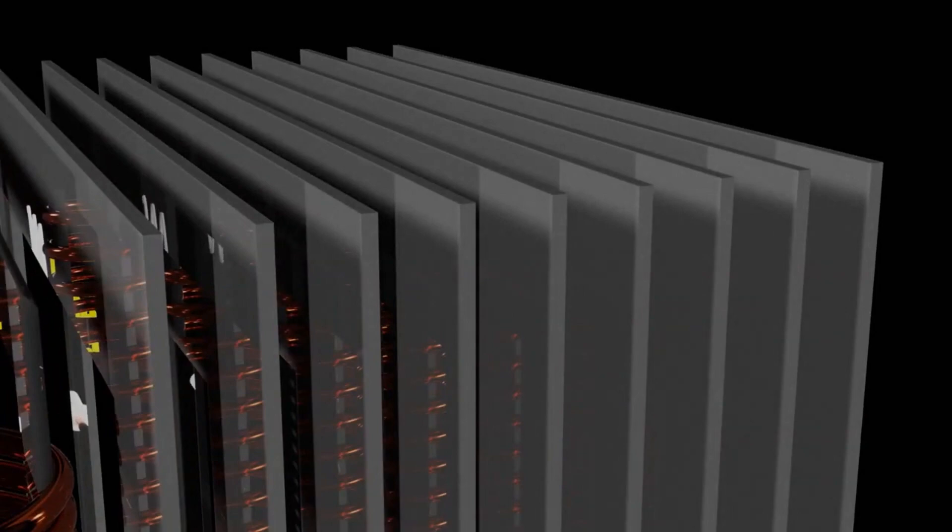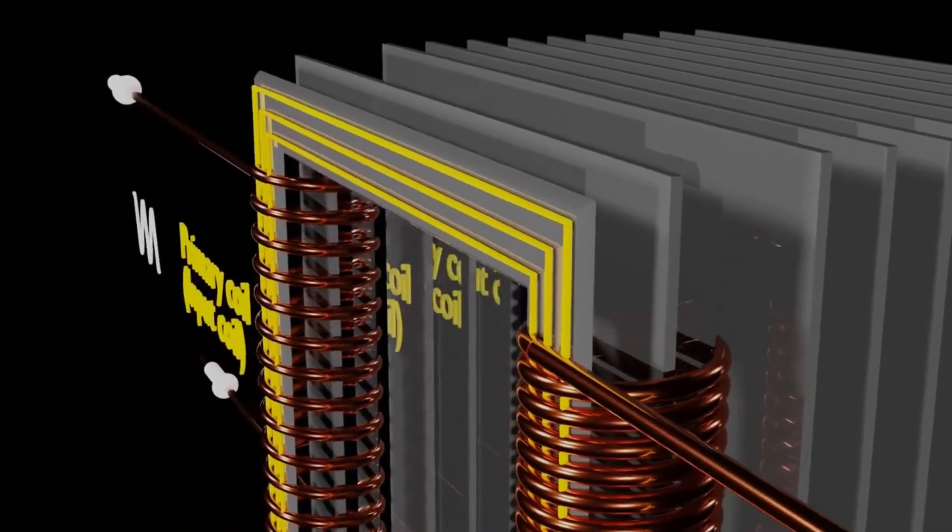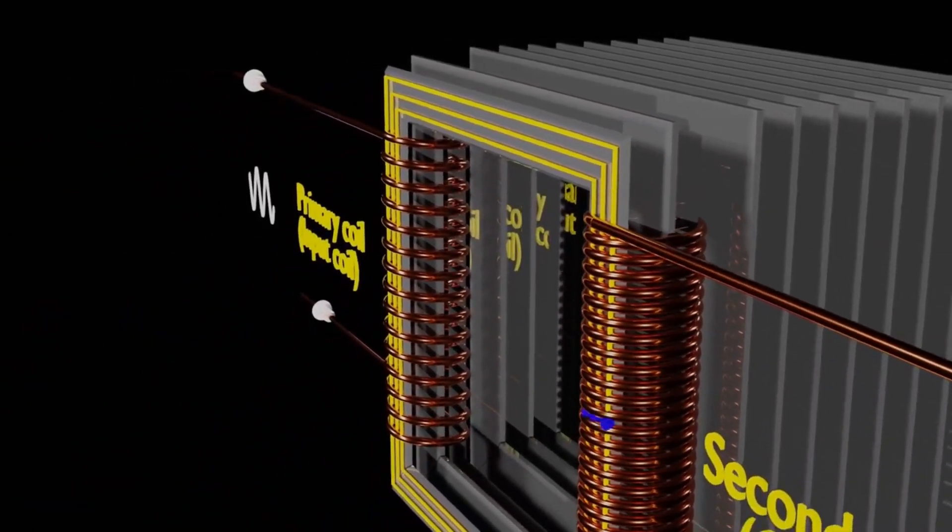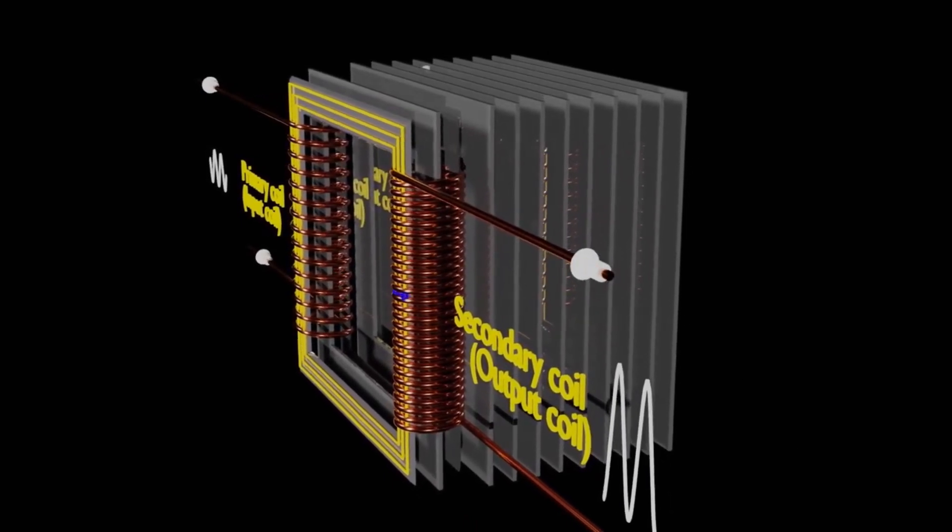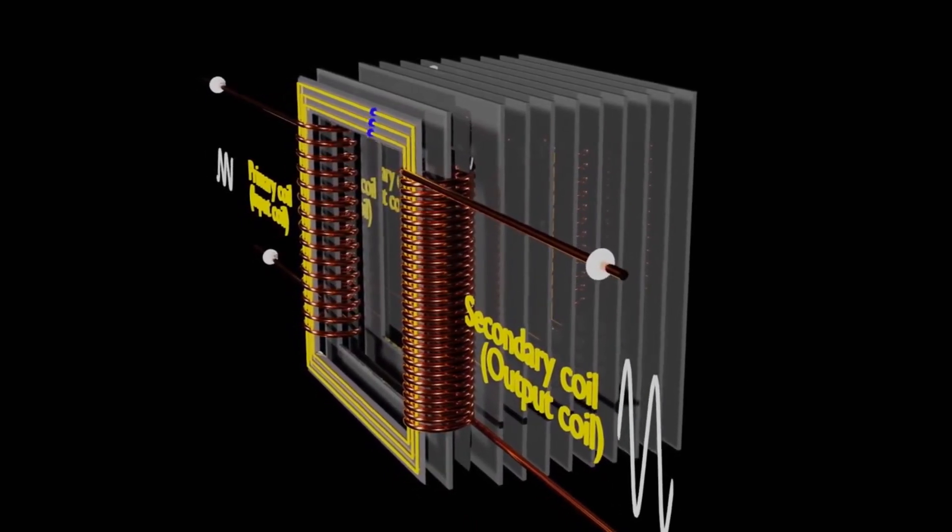Well, let's dive into it. The process of lamination involves layering the core with thin, insulated material, often made of silicon steel. This layering technique is not just for show. It serves a very specific and important purpose.